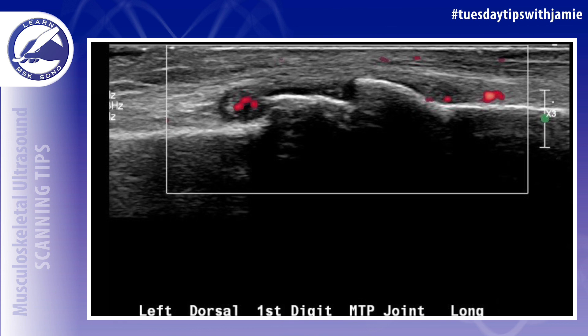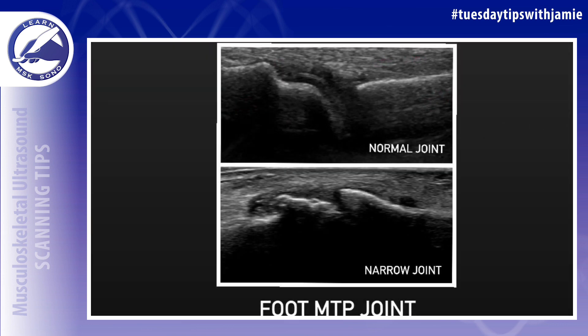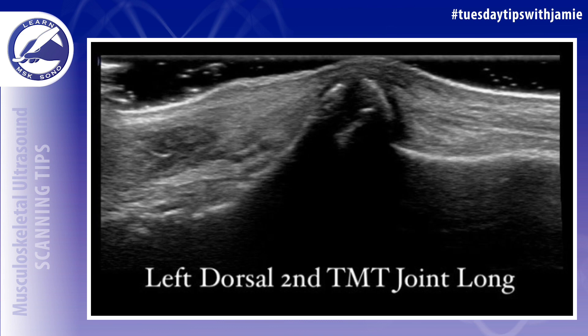Here's an example of inflammation of the synovial lining with hyperemia. Use power Doppler to detect this finding. This is located in the first MTP joint of the big toe. And here's a side-by-side comparison of a normal first MTP joint in the big toe versus one with joint space narrowing.